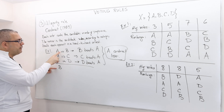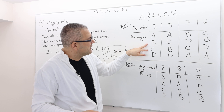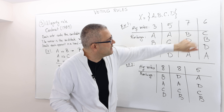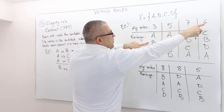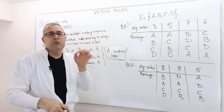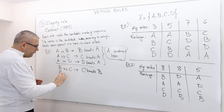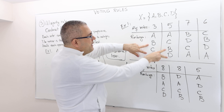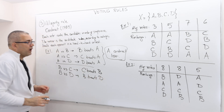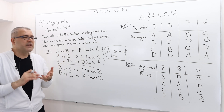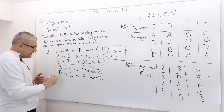Let's compare B with the others. I already know B beats A. So B versus C: looking at BC comparisons, 3 plus 7 is 10 people prefer B to C, and 5 plus 6 is 11 people prefer C to B. So C beats B. What about B versus D? Everybody prefers B over D, so B beats D. Because B beats at least one alternative, B is not a Condorcet loser, but it's not the Condorcet winner either, since C beats B.